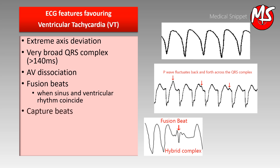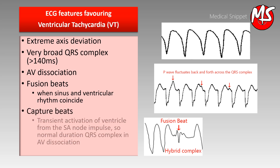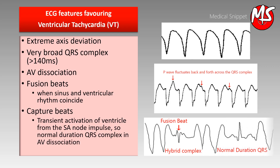In VT, there may also be capture beats. These momentarily occur during AV dissociation when the ventricle is activated by the SA nodal impulse.